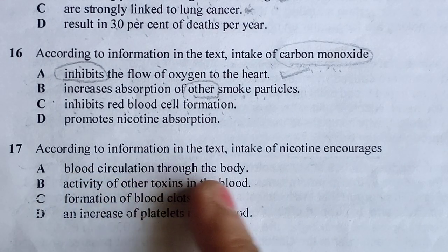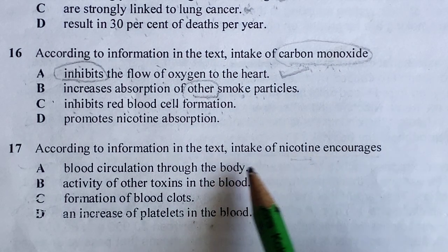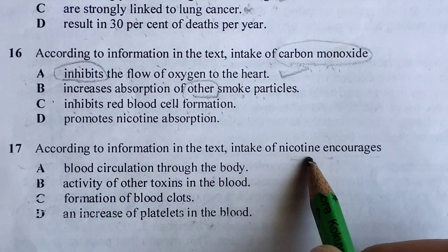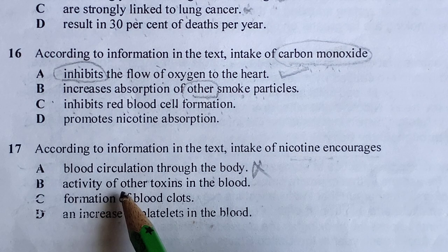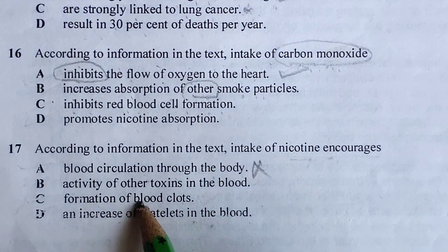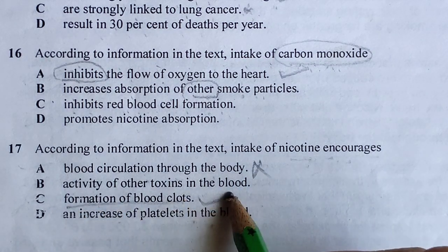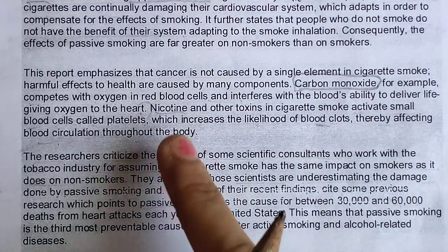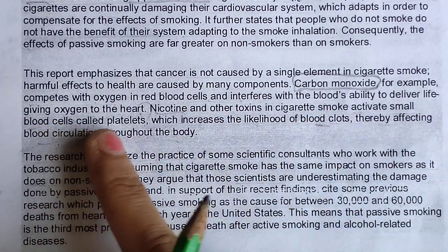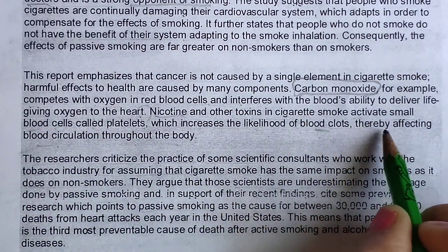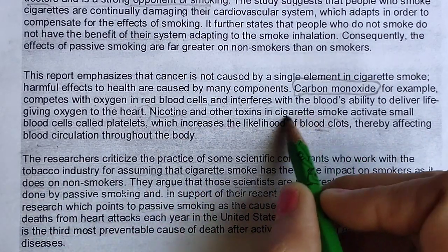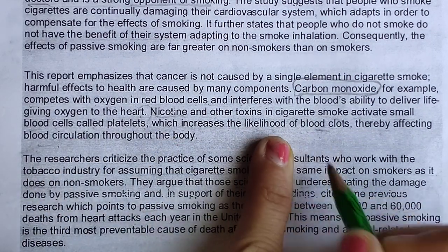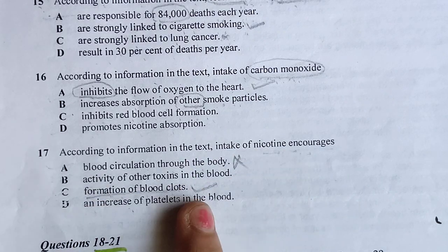Coming to question 17: 'According to the information in the text, intake of nicotine encourages...' We already read that nicotine and other toxins in cigarette smoke activate small blood cells called platelets, which increases the likelihood of blood clots, thereafter affecting blood circulation. Options: 'encourages blood circulation throughout the body' — no, a bad thing cannot encourage circulation; 'activity of other toxins in the body'; 'formation of blood clots' — yes, definitely; 'increase of platelets in the blood'. The answer is formation of blood clots.